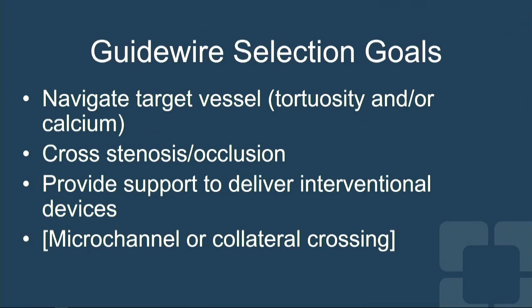So what is a guide wire supposed to do? Obviously, it's supposed to navigate the target vessel, get to the tortuosity, get to the calcium. You cross the stenosis, and then you need to have enough support to deliver equipment — deliver balloons, deliver stents, deliver microcatheters. And then maybe at the tail end are guide wires specifically designed to cross microchannels or collaterals for CTO operators.